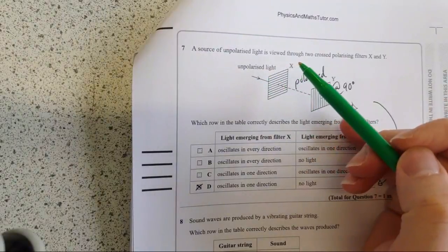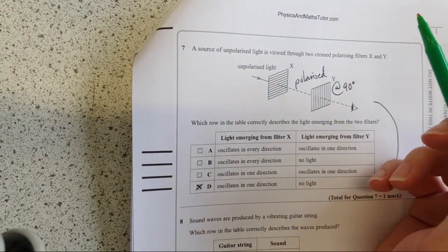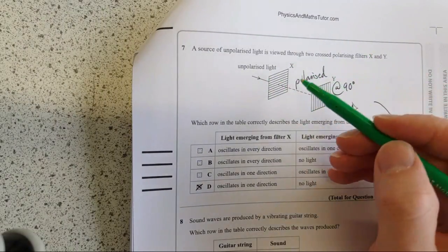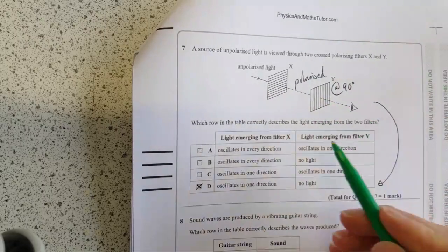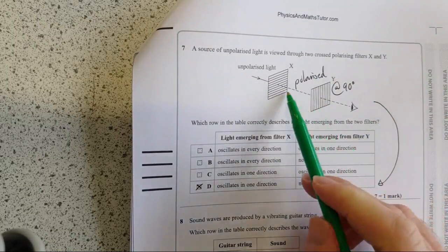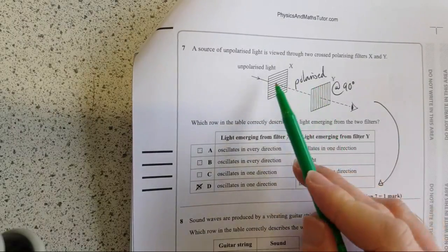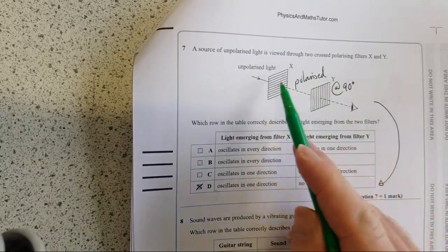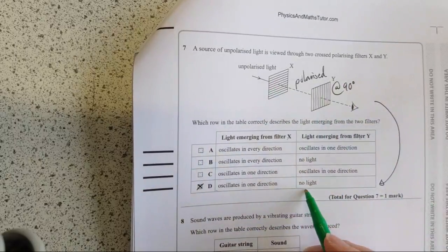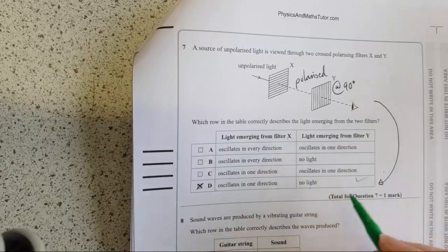The source of unpolarised light is viewed through two cross polarising filters, X and Y. So what's the case between X and Y? The light emerging from filter X and the light emerging from filter Y. Well, the light emerging from filter X gets polarised. So that means oscillates in one direction, and this is at 90 degrees to this first one. So there is no light, so the only one that makes any sense is this bottom line here.